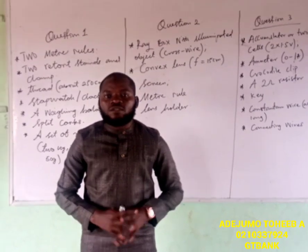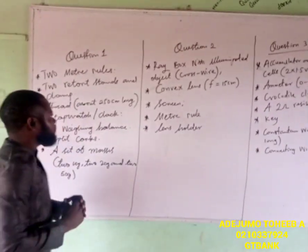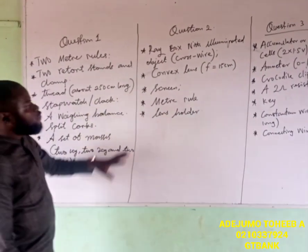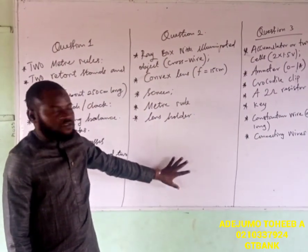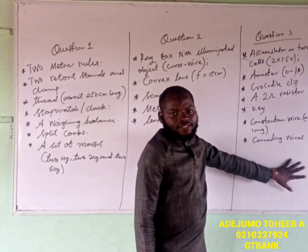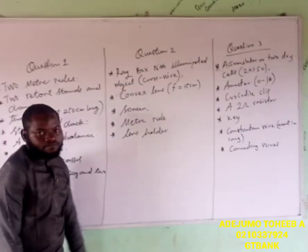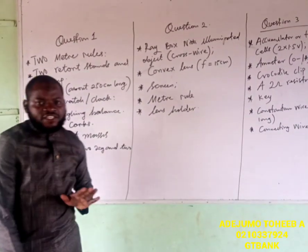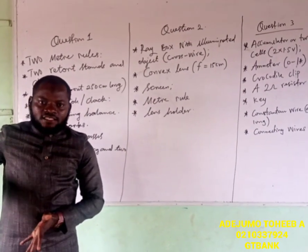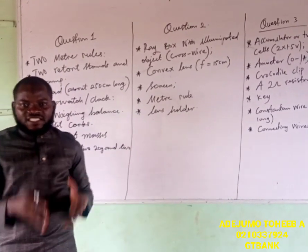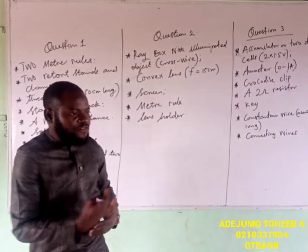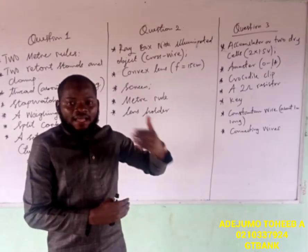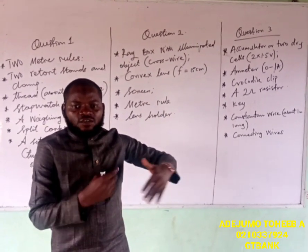What are we to focus on for this year's practical? If you look at the board, we have Question 1 with its apparatus, Question 2 with its apparatus, and Question 3 with its apparatus. What we need to do now is check these apparatus — I'm talking to teachers now. For you to guide your students on how to carry out these experiments, 50% of what the examiner wants to set should already be exposed to them.